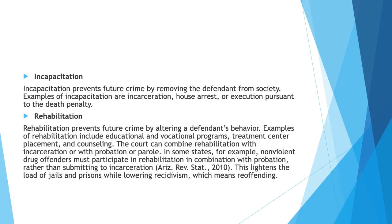Rehabilitation prevents future crime by altering a defendant's behavior. Examples of rehabilitation include educational and vocational programs, treatment center placement, and counseling. The court can combine rehabilitation with incarceration, probation, or parole. In some states, for example, non-violent drug offenders must participate in rehabilitation in combination with probation rather than incarceration. This lightens the load of jails and prisons while lowering recidivism, which means re-offending.